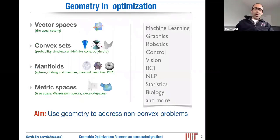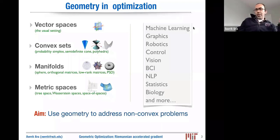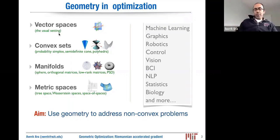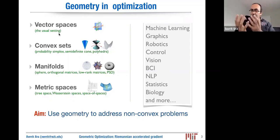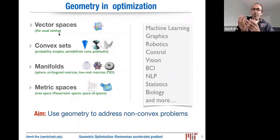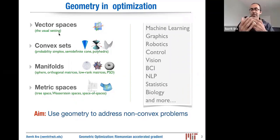Geometry comes up in a variety of ways in optimization. The usual setting is that your parameters live in some vector space, R^d, endowed with a norm — usually the Euclidean norm. That's been deeply studied in the theory of convex optimization. Even within convex optimization, you have beautiful geometry through specific sets: you may be optimizing over distributions, getting a probability simplex, or working with an SDP cone, or other special polyhedra.